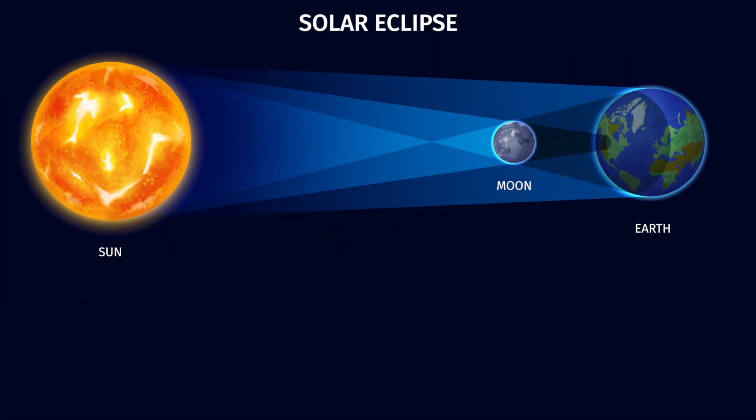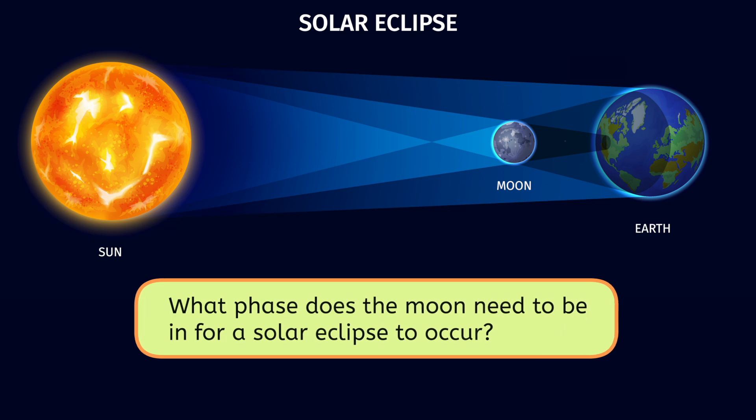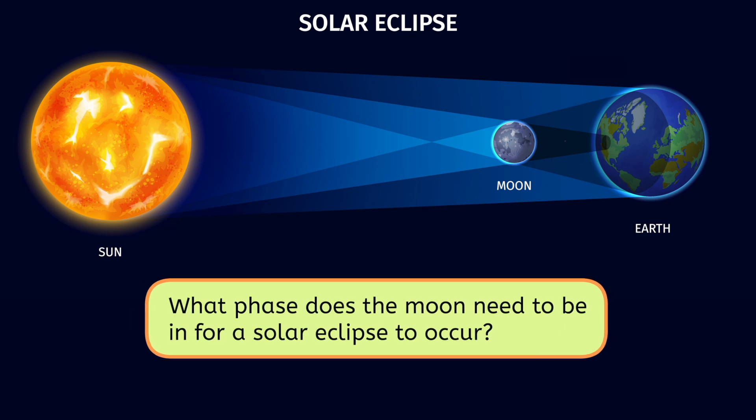During a solar eclipse, the moon passes between the Earth and the Sun, casting a shadow that blocks sunlight from reaching Earth. But here's a question for you to think about. What phase does the moon need to be in for this to happen? Take a look at the diagram, pause the video, and record your guess in your guided notes.